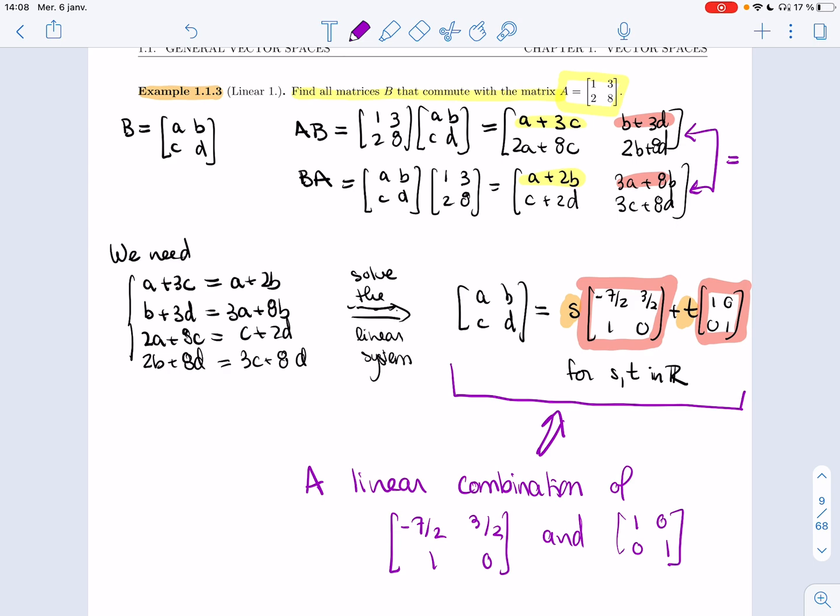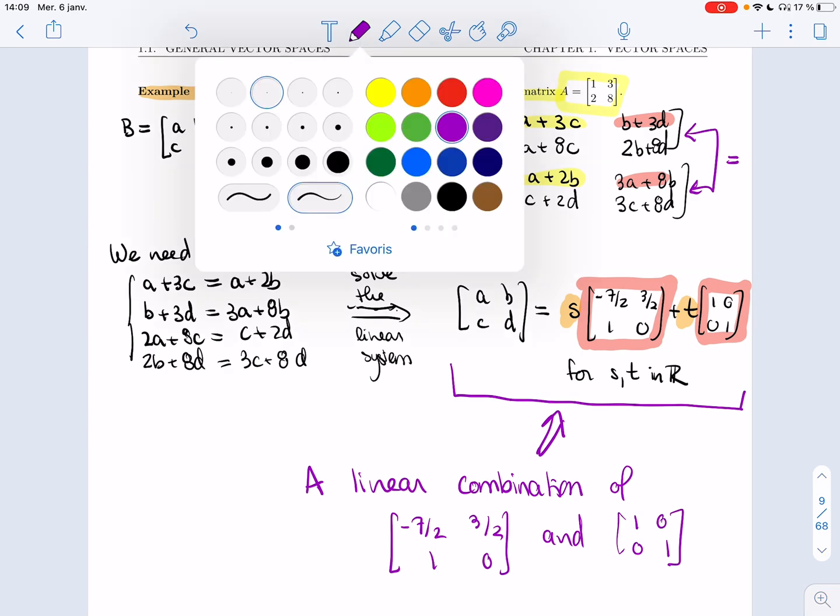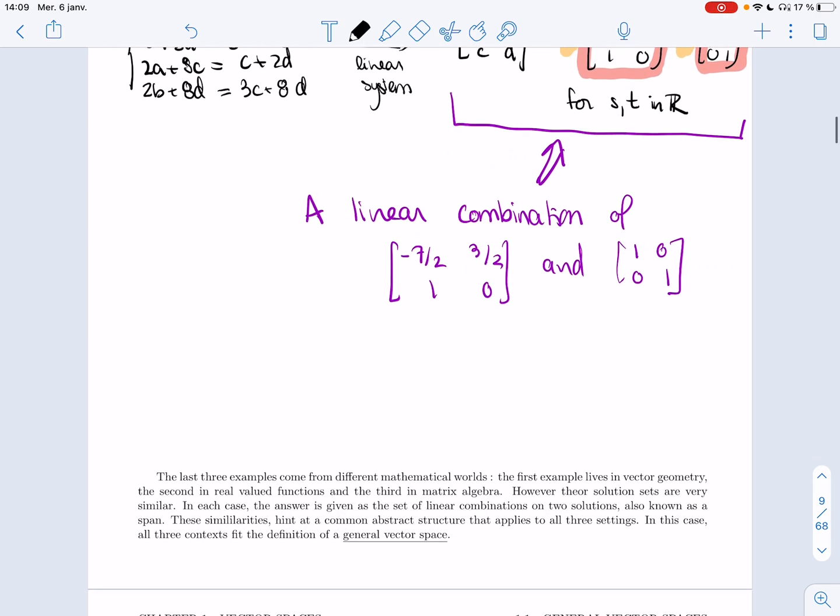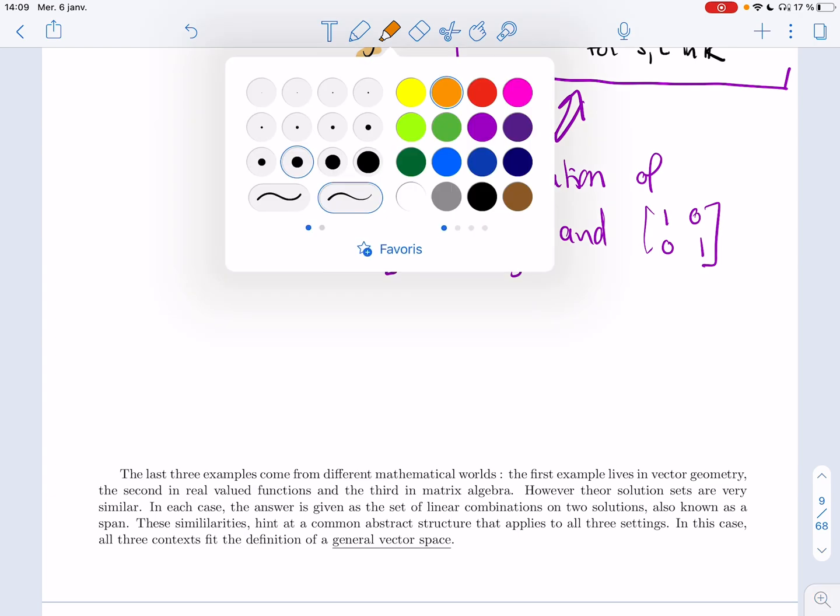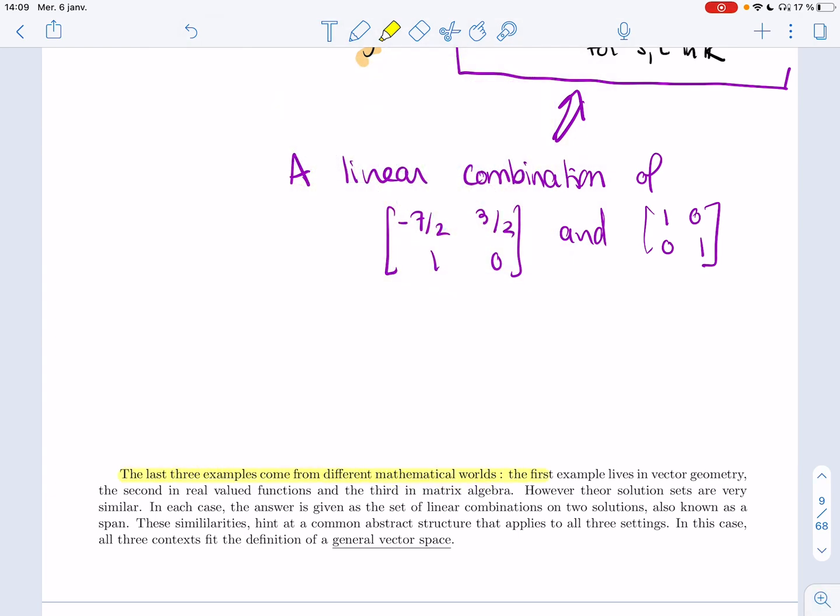So three different examples: one talking about vectors and linear systems, one talking about differential equations and functions, and one talking about matrices commuting. In all three cases, we end up with a linear combination of something, not the same thing every time. The last three examples come from different mathematical worlds. The first example lives in vector geometry, the second in real valued functions, and the third in matrix algebra. However, their solution sets are very similar. In each case, the answer is given as the set of linear combinations on two solutions. That set of all linear combinations is called the span.